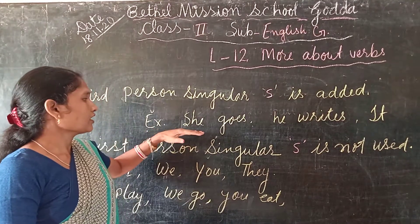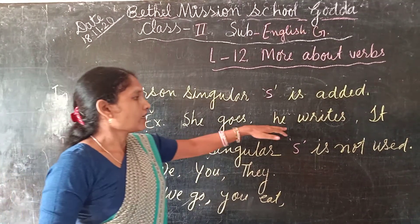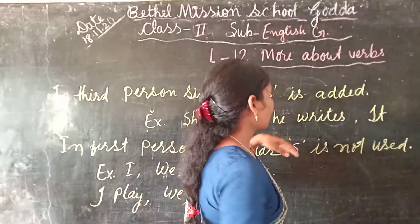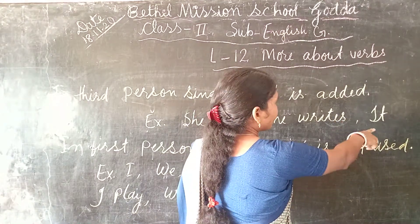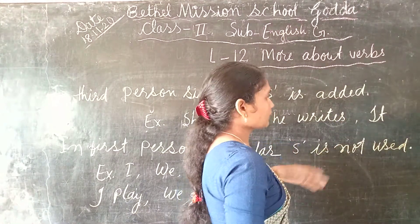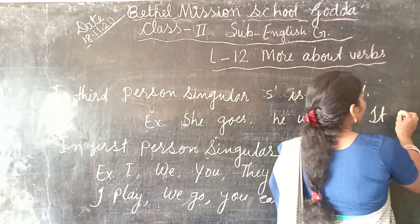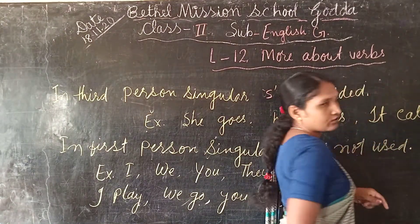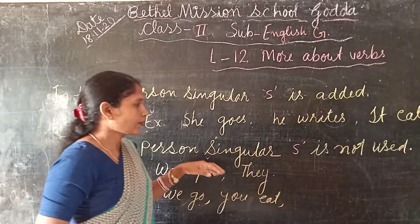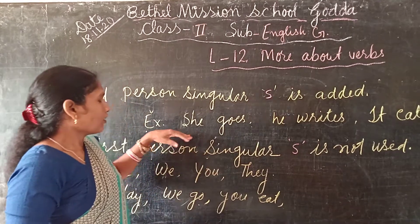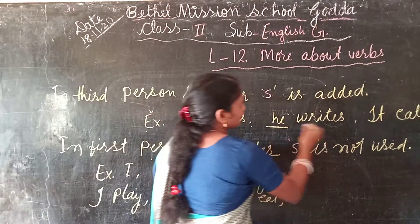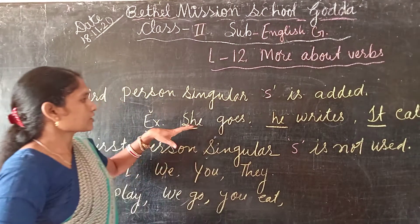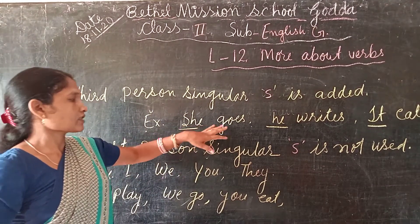For example: she goes, he writes, and it sings or it kicks. You can write anything like these. So all these are what person? Third person. So in third person singular we add 's'.